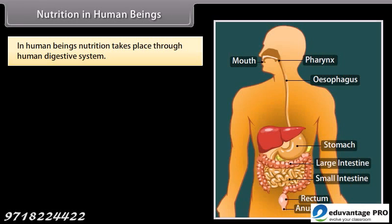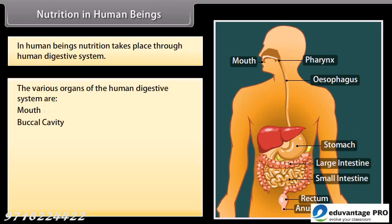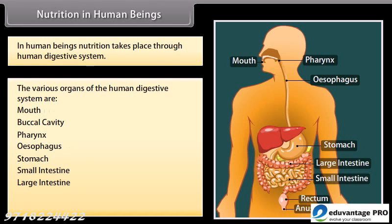In human beings, nutrition takes place through the human digestive system. The various organs of the human digestive system are: mouth, buccal cavity, pharynx, esophagus, stomach, small intestine, large intestine, rectum, and anus.